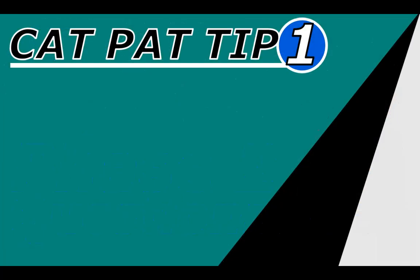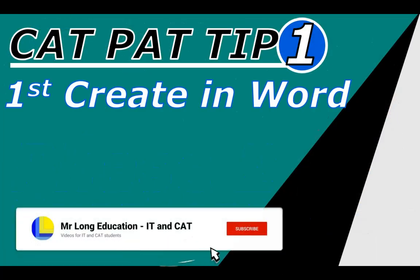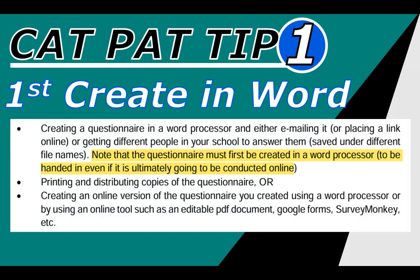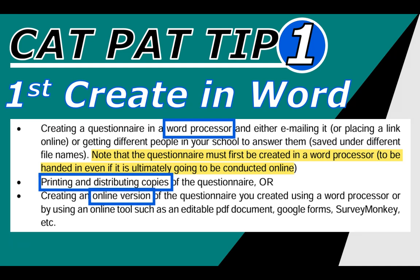CatPAT tip number one: you first need to create your survey in Word. Plan it in Word, make sure you get the layout and the wording correct. The instructions state that even if you do this questionnaire online via online forms, you still need to have evidence of your questionnaire done in Word. Once done, you can create a PDF or Word document to email, print physical copies, or create an online version using, for example, Google Forms.